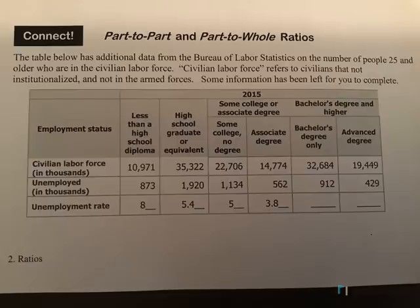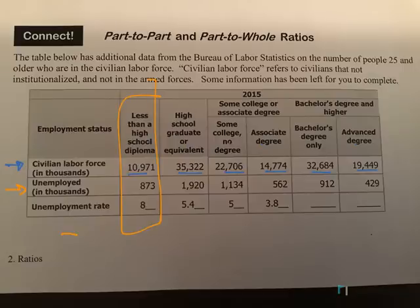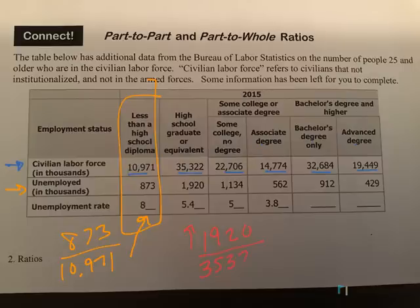Next we're going to look at this table. We're talking about civilian labor force in thousands, so each one of these groups has a particular number in thousands — that means three zeros at the end. That's how many people are in that particular age group. And then the next part is the unemployed. So in the less-than-a-high-school-diploma group, 873,000 over 10,971,000 are unemployed. When we look at high school graduate, 1,920,000 out of 35,322,000 — that's how we're getting this number.